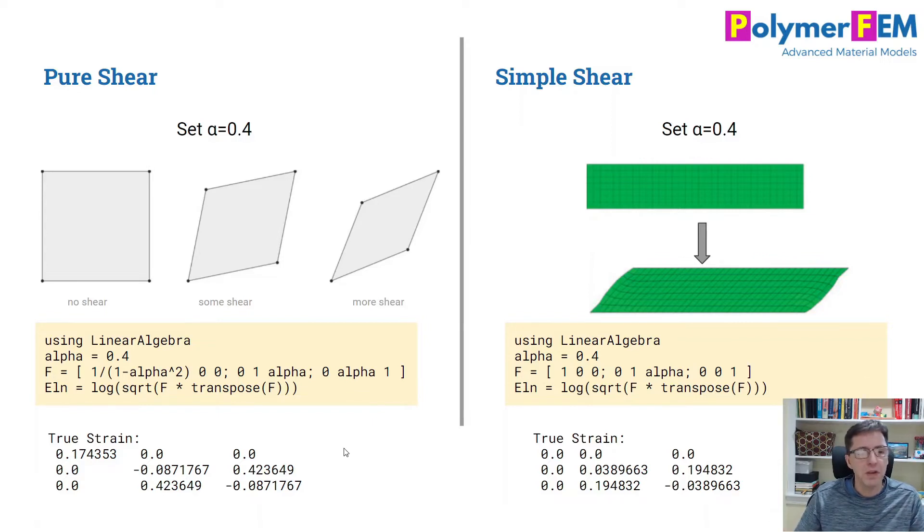In pure shear, we can do a very similar approach. We calculate it using the deformation gradient, multiply it with its transpose, take the square root of the logarithm of that to get the logarithmic strain, the true strain. We'll see that the strain is also in this case dominated by the shear term. But they're very different, right? There's clearly differences between simple shear and pure shear. The different shear experiments give different responses. So don't mix them up.